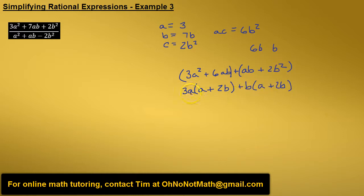So now we have two binomials, let's look for a common factor, which is a plus 2b. We've got it here, we've got it here, so we can pull that out, a plus 2b times 3a plus b. So we can rewrite this numerator as a plus 2b times 3a plus b. We factored the numerator.